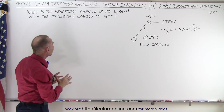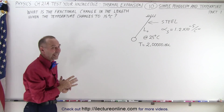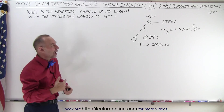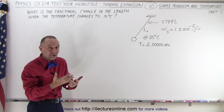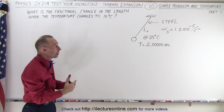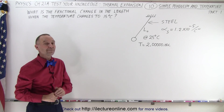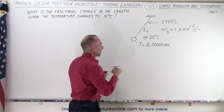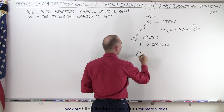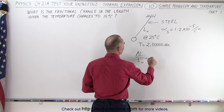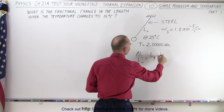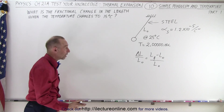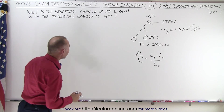First we're going to try to find the fractional change in the length of that pendulum, so that on the next video we can see how much that changes the period and how much that changes the time of the clock in, for example, a day. The fractional change would be the change in the length divided by the original length, which is equal to L_final minus L_initial divided by the original length. So we need some sort of equation to calculate the change in the length.